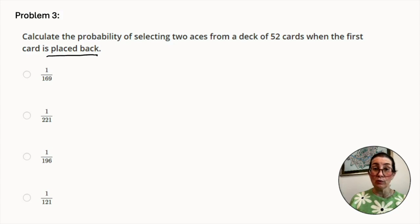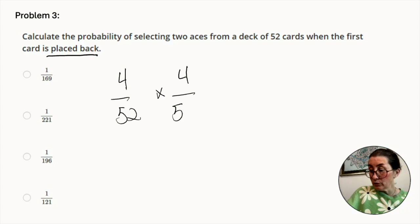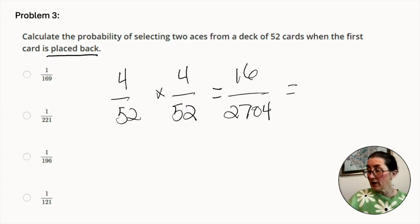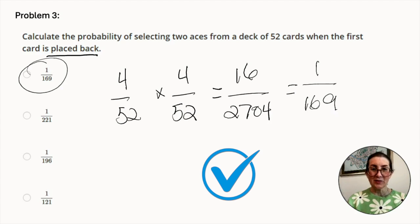However, the probability of choosing 2 aces in 2 consecutive selections decreases per selection. So we multiply 4 over 52 times 4 over 52 to get this new probability. 4 over 52 times 4 over 52. This is equal to 16 over 2,704. When we simplify it, it is 1 over 169. So this is our answer.